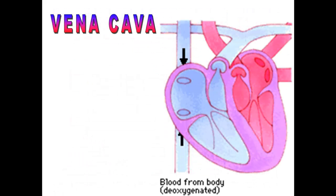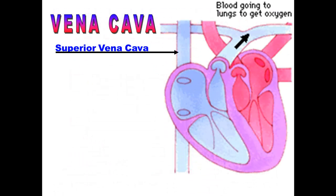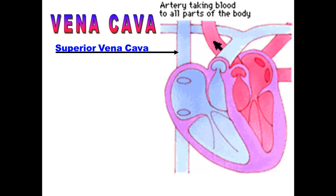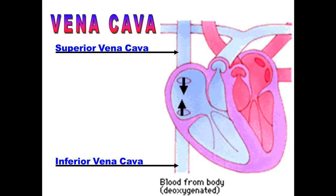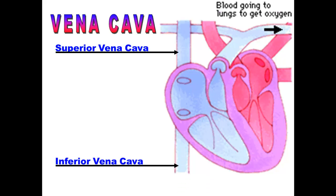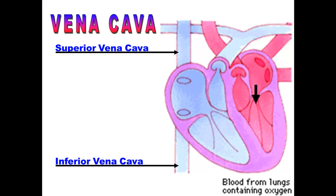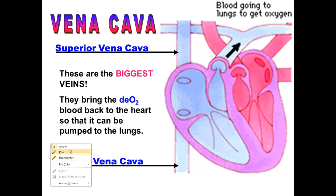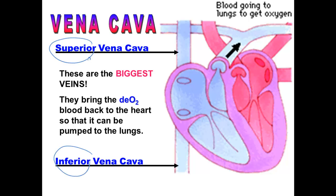The vena cava are the biggest veins in your body. The superior vena cava brings blood from the upper part of your body back to the heart, and the inferior vena cava brings deoxygenated blood from the lower part of your body back to the right atrium. They bring deoxygenated blood from the top and bottom of your body and dump it into the right atrium so it can be sent to the lungs to get oxygen. Note that the superior vena cava is also called the anterior vena cava, and the inferior vena cava is also known as the posterior vena cava — make sure you know both terms.